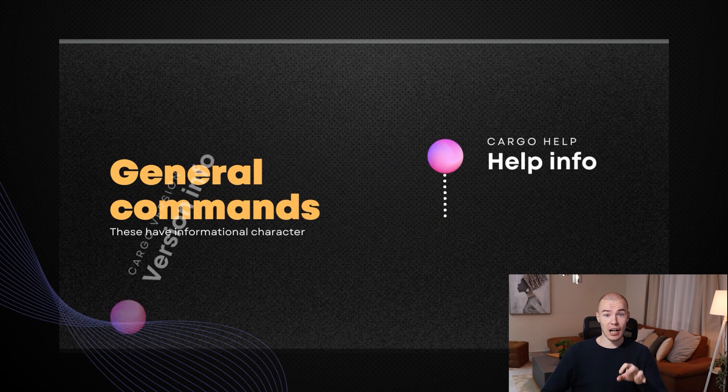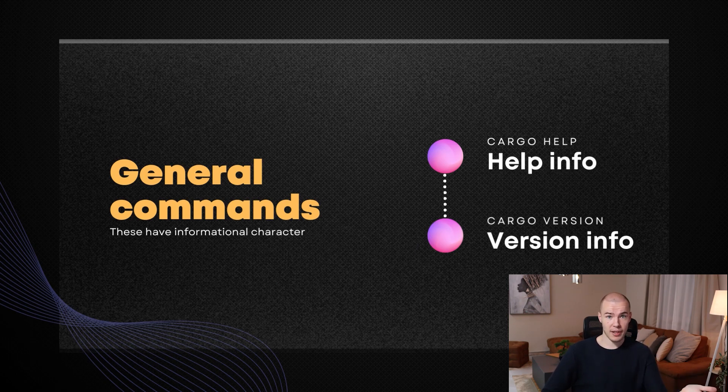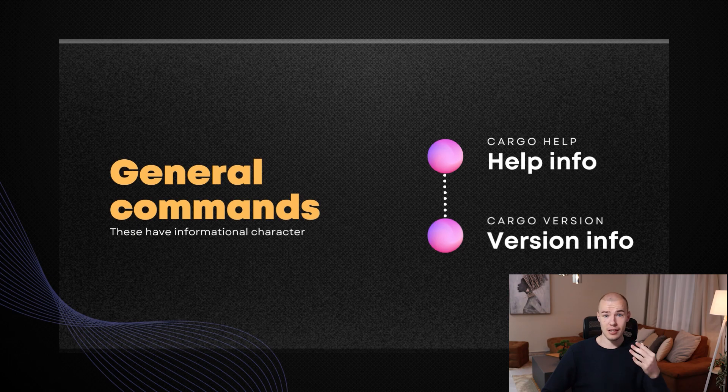Awesome job! Now you know how to ask for help from cargo itself. The second general command is cargo version. When you invoke this command you will get a version of your cargo installed — basically, the version of the cargo package manager tool installed on your computer. This might not seem very beneficial but sometimes you want to make sure that the versions you are using are all compliant. Also, if you run cargo version and you do not have cargo installed, you will see that it's actually not installed.